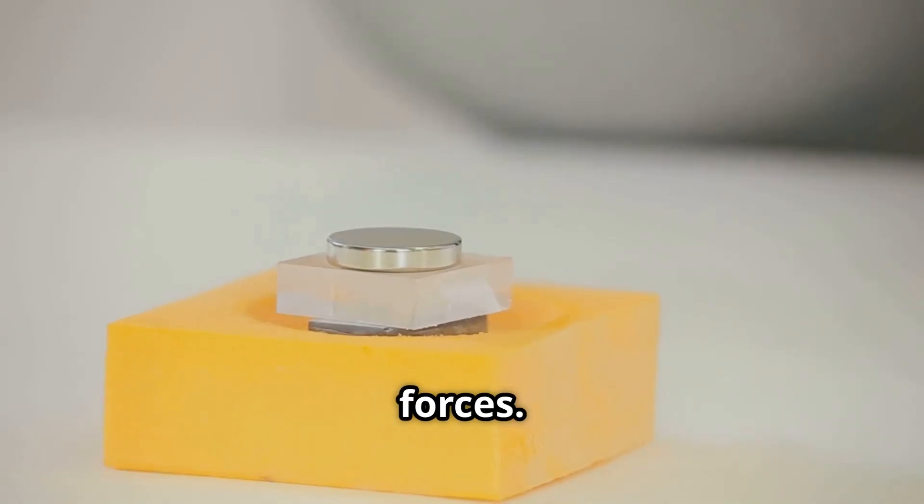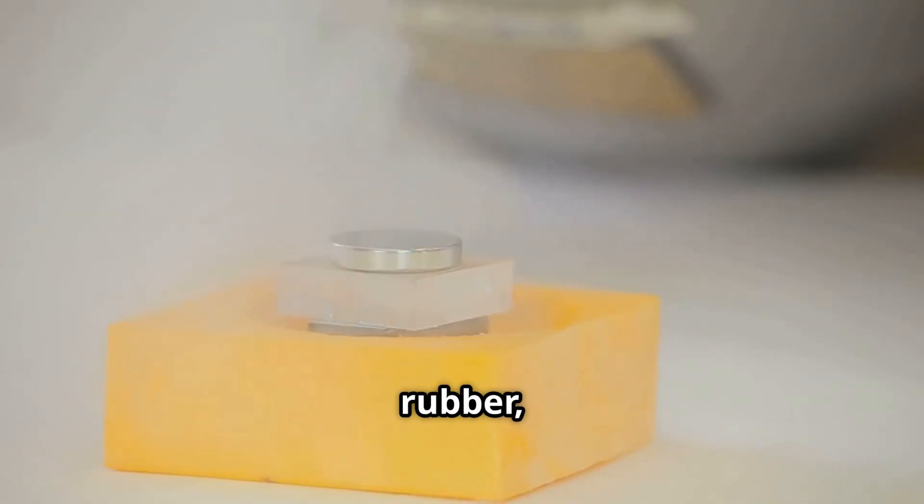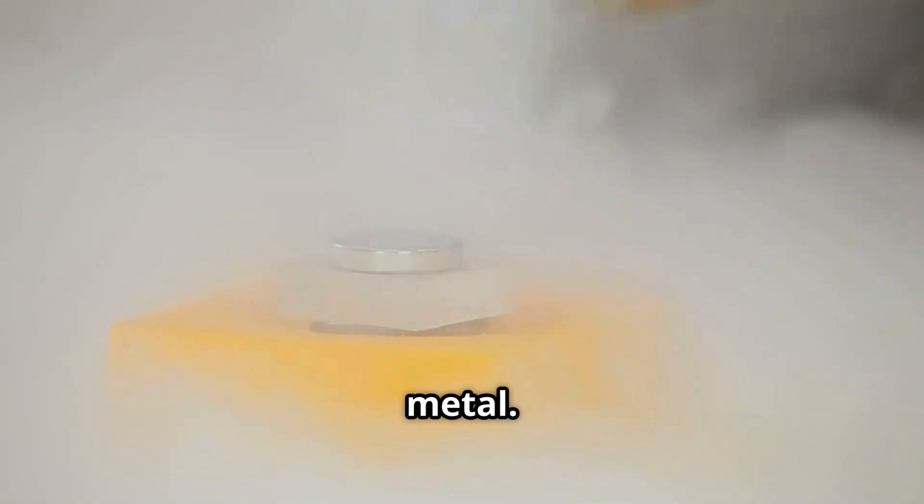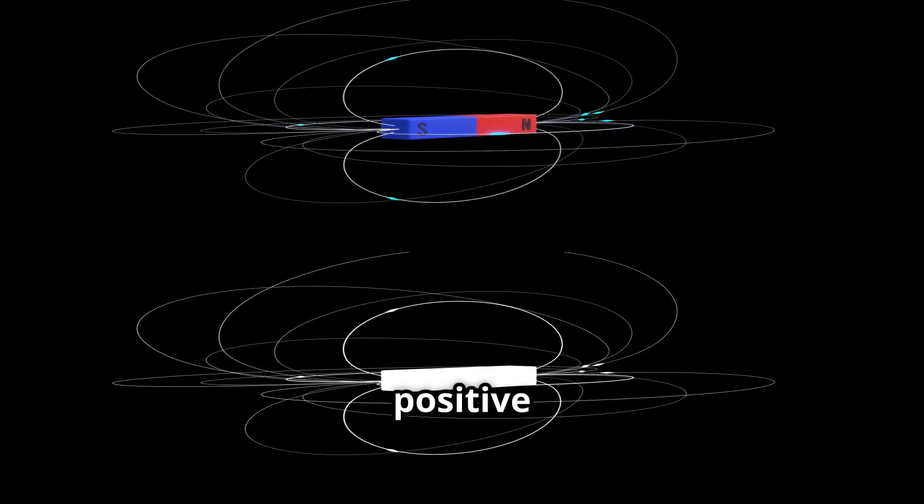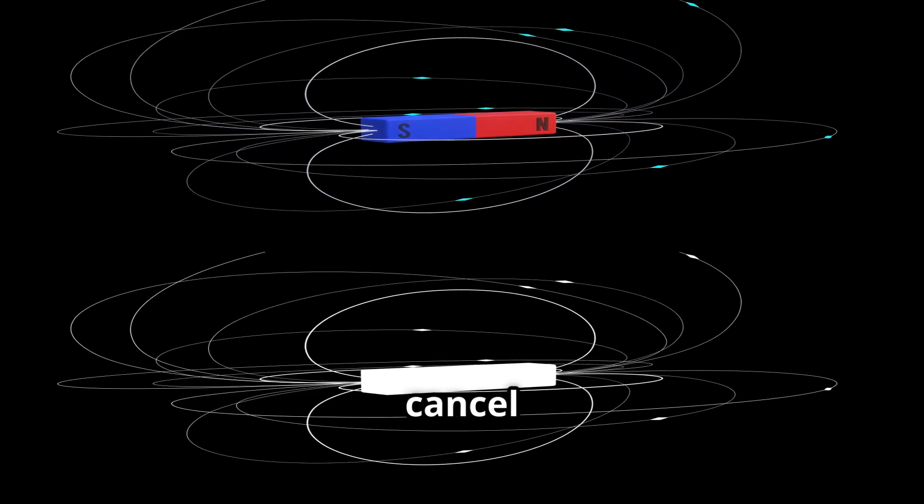We've mastered electromagnetic forces. We can block electricity with rubber, redirect magnetism with metal. Electromagnetism has two sides. Positive and negative charges that can cancel each other out.